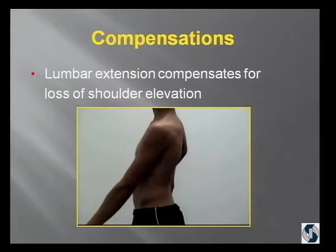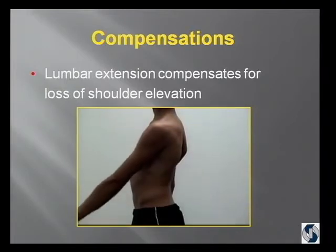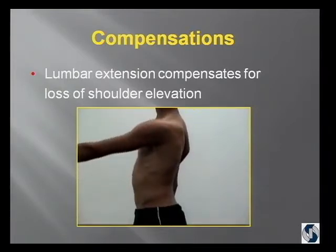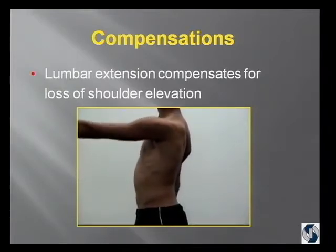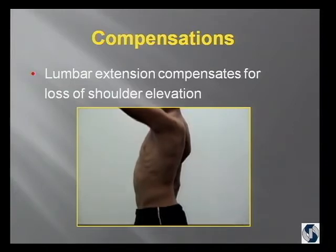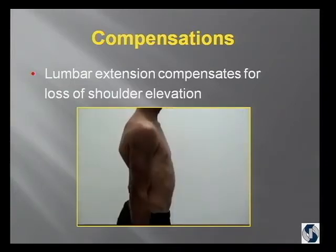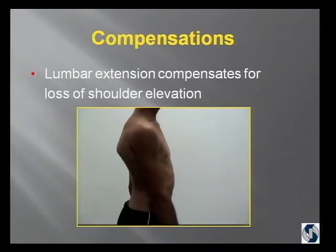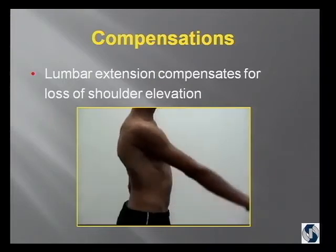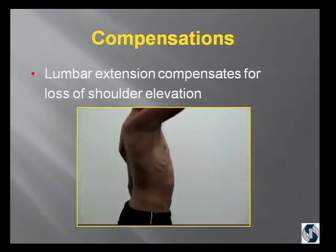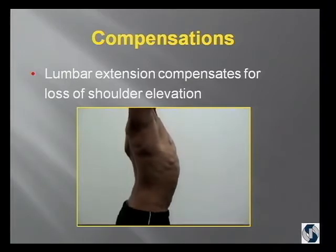There are compensations. This is that boy with the tight pec minor — watch his lumbar spine as he goes to elevate. Not so bad on his non-dominant side, just a little bit of increased lordosis. But on the right, watch what he has to do to get his arm overhead. So it's all connected, and if you don't look there, you won't see it.